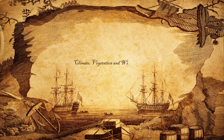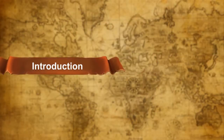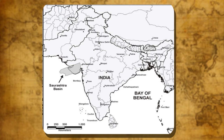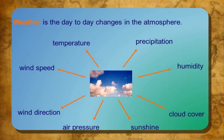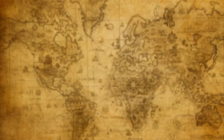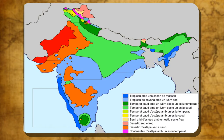Climate, Vegetation and Wildlife Introduction. India is a vast country with varied relief features. It is because of this that the climatic conditions vary greatly from region to region. The Himalayas and a monsoonal regime lend unity to this land which is known for great diversities. Weather is the day-to-day changes in the atmosphere. It includes changes in temperature, rainfall and sunshine. The climate also affects the lifestyle and other choices made by people. India is a land of varied climates, seasons and distribution of rainfall.